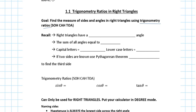Sometimes you see in some textbooks that they say primary trigonometric ratio, which is the same thing. Primary trig ratios are the sine, cosine, and tan. These are the three primary ones.